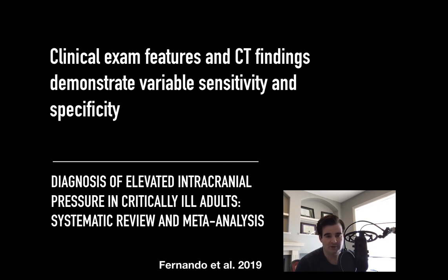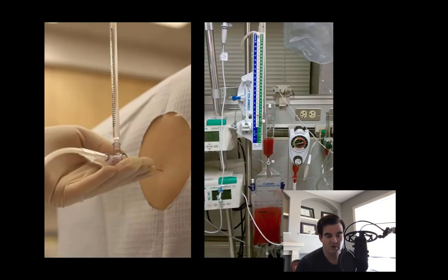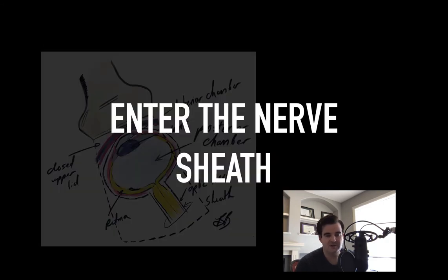Whether or not your clinical exam or CT demonstrates findings of elevated intracranial pressure matters little depending on your level of suspicion. If your pre-test probability is high, this could necessitate treatment and transfer. More invasive techniques can play a role, including lumbar puncture with manometry, or placement of extraventricular or intracranial devices in specialist neurocritical care units. However, contraindications often exist, or resources are simply unavailable or inaccessible. Enter the nerve sheath — a promising non-invasive tool to detect elevated intracranial pressure.